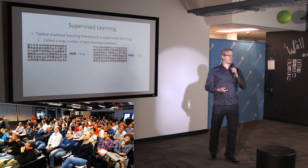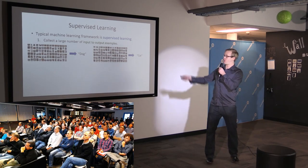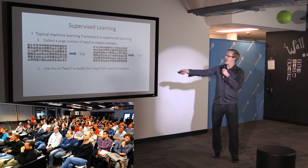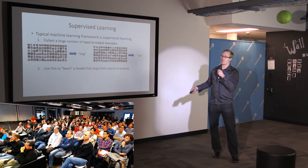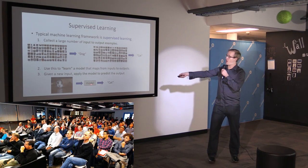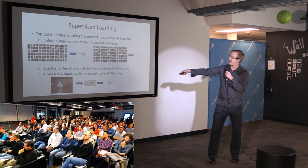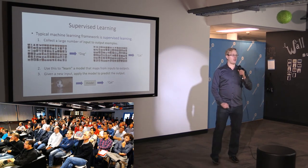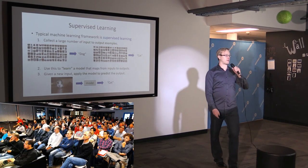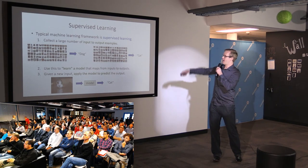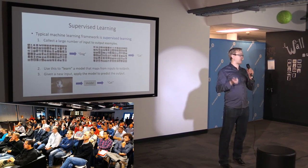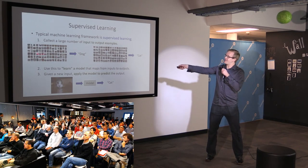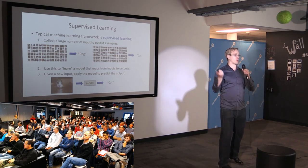The typical machine learning framework is supervised learning. As an example: I want to build a program that distinguishes cats from dogs. I collect a bunch of images of dogs and a bunch of images of cats, and I use that data to learn a model that maps from inputs to outputs. The output is a program where if I give it a new image, it spits out 'cat' even if it's an image it's never seen before. You can imagine doing this for many different tasks — any input and any output.